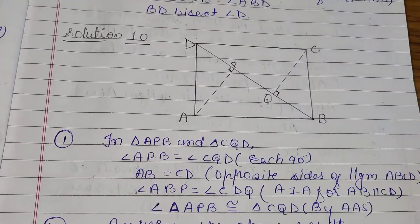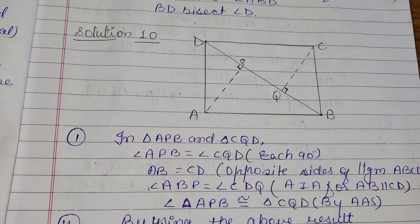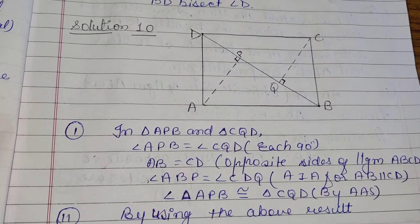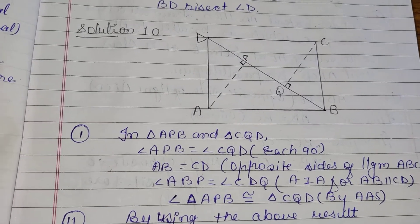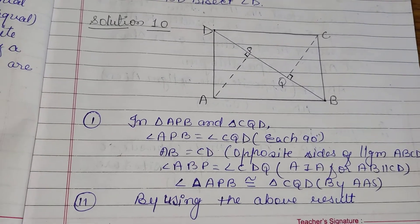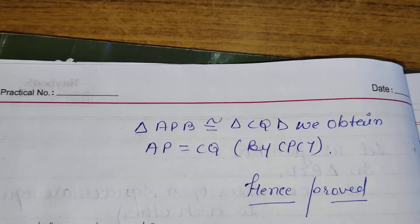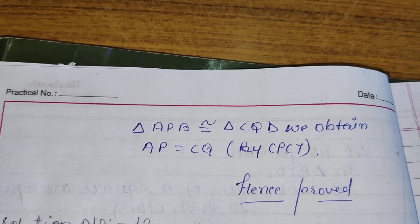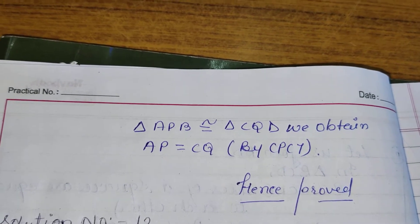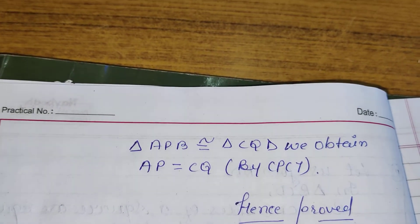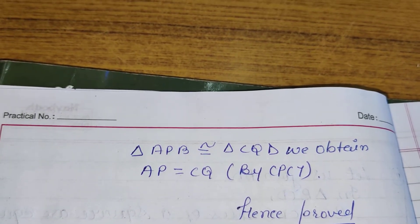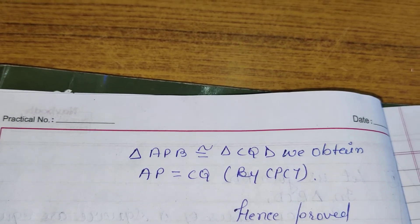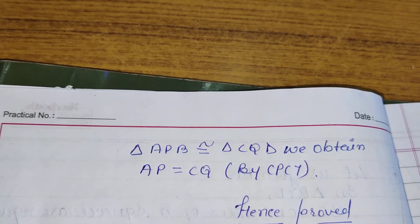By Angle-Angle-Side criteria, these two triangles are congruent. Using the above result for the second part — since triangle ABB is congruent to triangle CQD — we obtain AB is equal to CQ by corresponding parts of congruent triangles (CPCT).